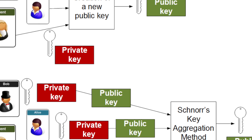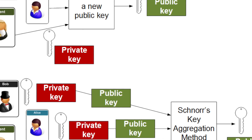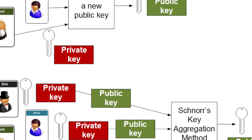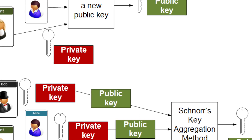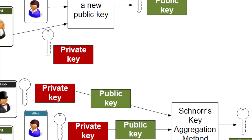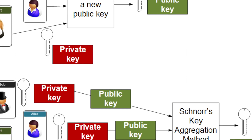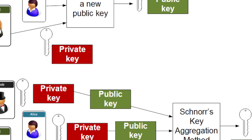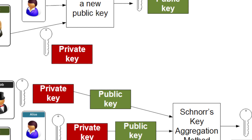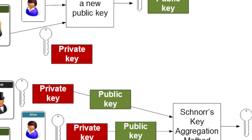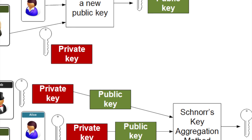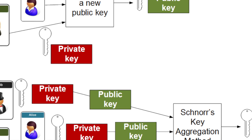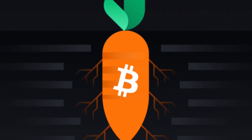Bitcoin's largest update in four years, Taproot is a highly anticipated set of features that will revolutionize the cryptocurrency's privacy capabilities. Simultaneously, we will also see improvements in scalability as transaction aggregation will aid with reducing network congestion.